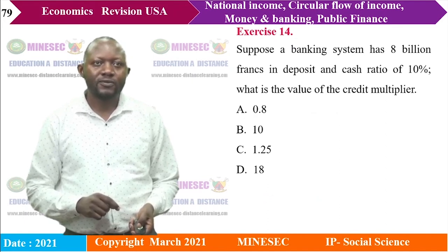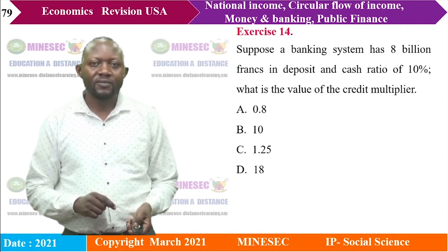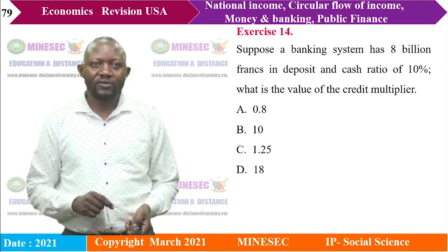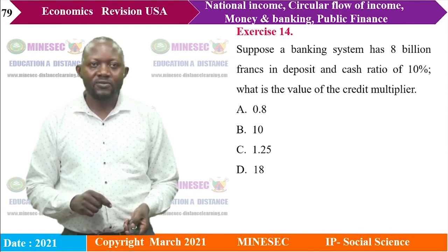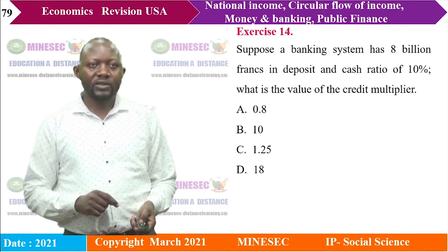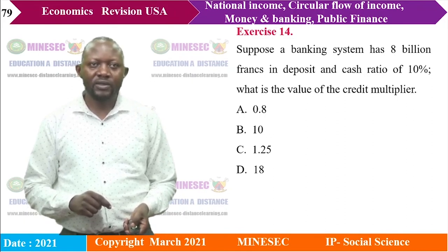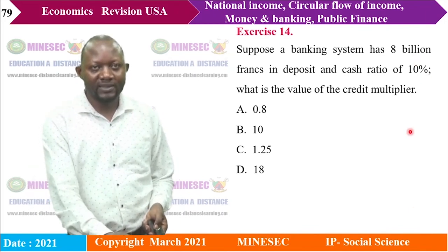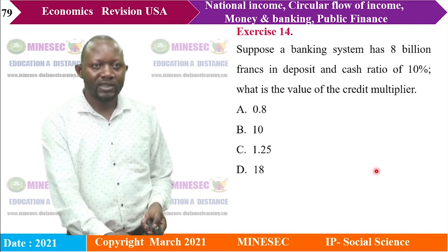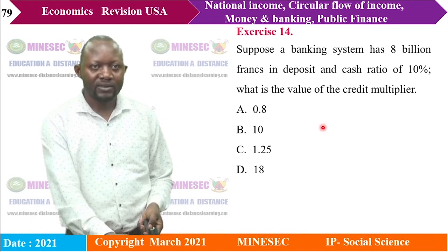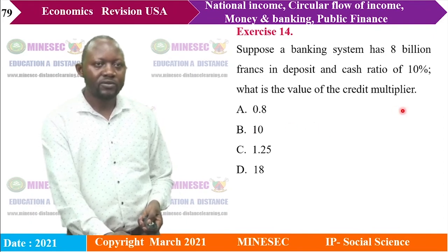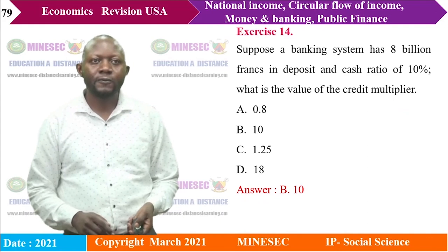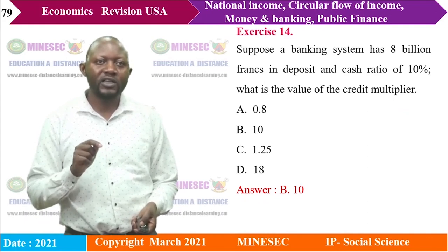Exercise 14: A banking system has deposits of 8 billion francs and a cash ratio of 10%. What is the value of the credit multiplier? The formula is: credit multiplier = 1 / cash ratio = 1 / 0.1 = 10. The best option is B.